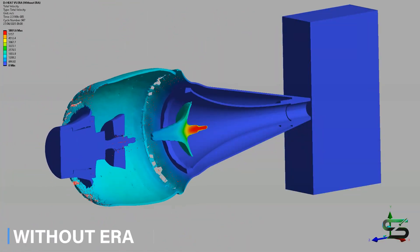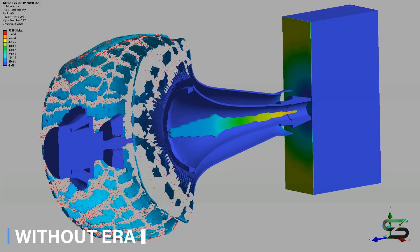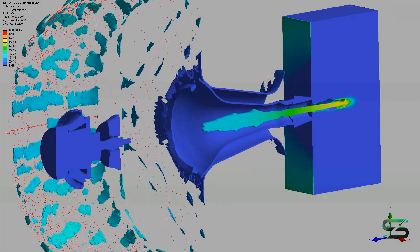The PG-7V will have no problem penetrating the side armor of the T-72B without ERA protection.